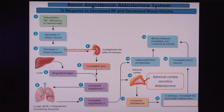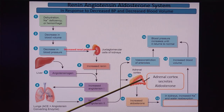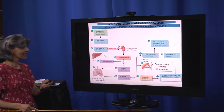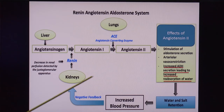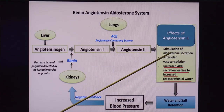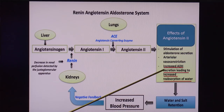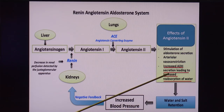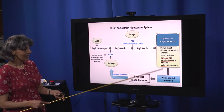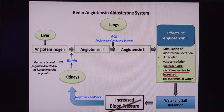To summarize the RAA system: angiotensin 2 causes arteriolar vasoconstriction, stimulates aldosterone release, and increases ADH secretion — all of which restore blood volume and blood pressure back to normal. This concludes our discussion of cardiac output and the regulation of blood pressure. Thank you very much.